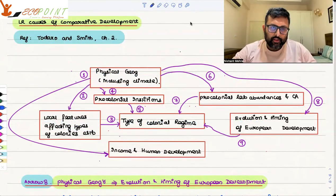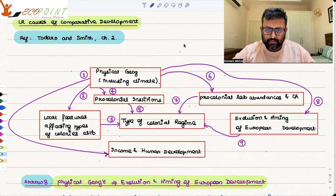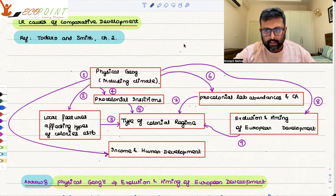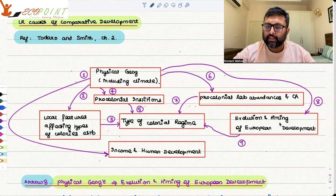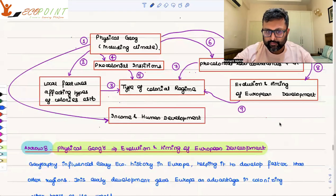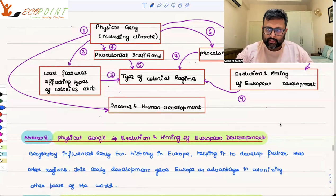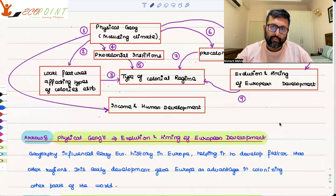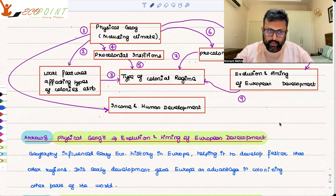Let's take our discussion further about the long-run causes of comparative development. We've talked about seven arrows. Let's start with the eighth arrow — how physical geography is also affecting the evolution and timing of European development. Geography has influenced economic history in Europe. Those countries developed fast whose geography was favorable, even in Europe.